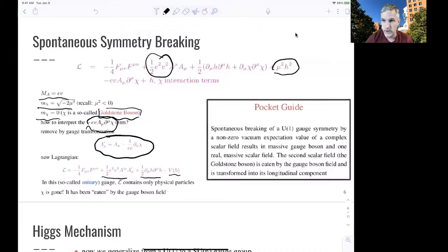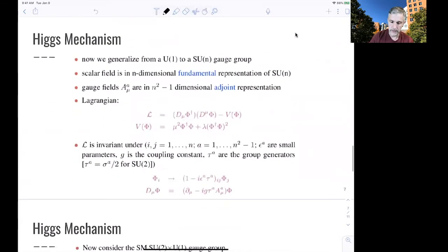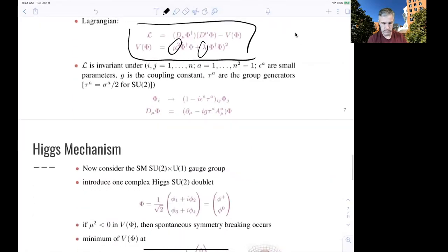That was a simplified toy model. Let's look at the standard model. So now here, we have to generalize from U(1) to SU(2) or SU(n) gauge groups. The scalar field is now an n-dimensional fundamental representation of that group. For the standard model, that would be SU(2). The gauge fields are n-squared minus one-dimensional adjoint representations, like our photon, for example, or our unmixed W photon field. And the Lagrangian looks very similar to the one we just saw before with our potential. Again, we have this mu-squared term. We also have a lambda term here. And then we require a local gauge invariance again.